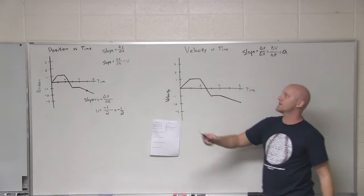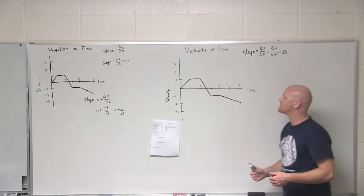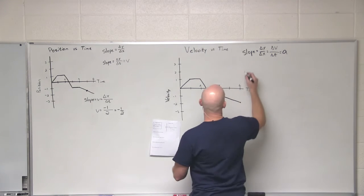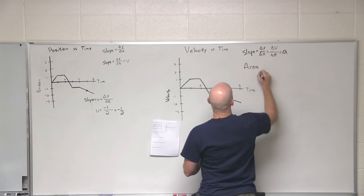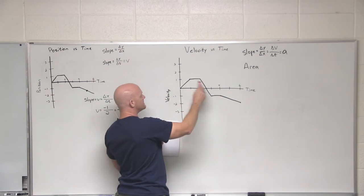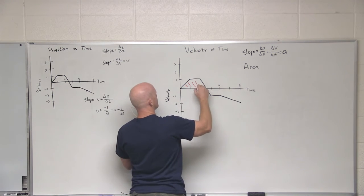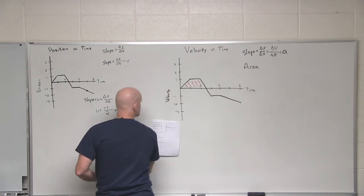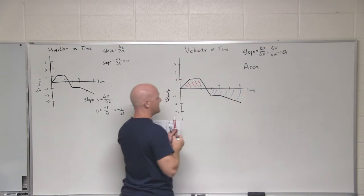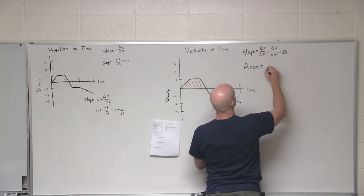On this graph, velocity versus time, our slope gives us acceleration rather than velocity like it did on the position versus time graph. We get one more helpful piece of info off this graph: the area under the curve — technically area both above and below the x-axis. It turns out that area gives us displacement.